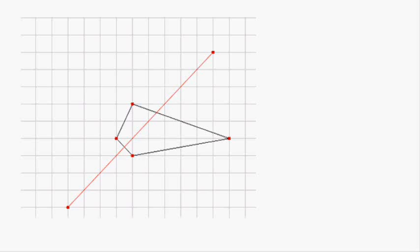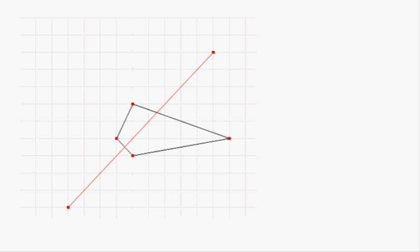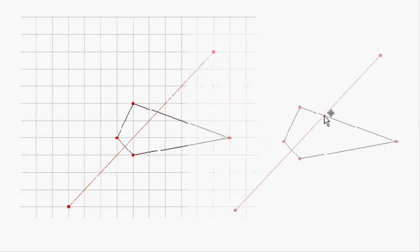Let's just do it. First, we get some tracing paper, and we make a tracing of the shape and the reflection line, and slide it off.